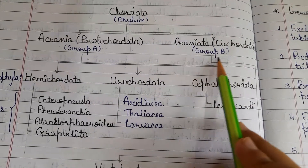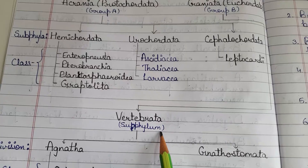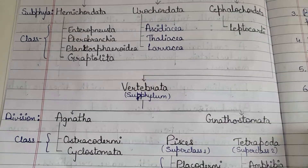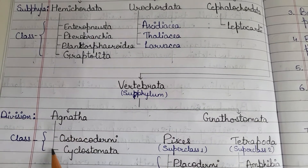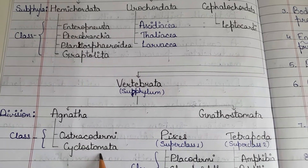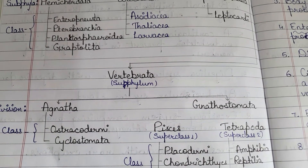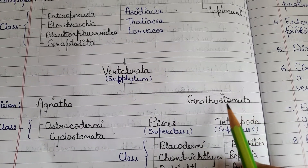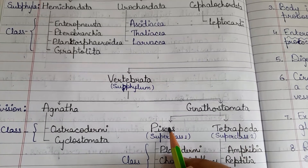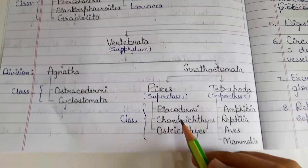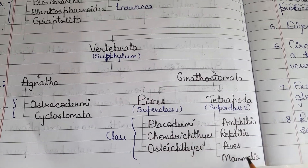The second group, Craniata (Euchordata), is sub-divided into sub-phylum Vertebrata. Vertebrata is divided into two divisions: Agnatha and Gnathostomata. Agnatha is divided into classes Ostracodermi and Cyclostomata. Gnathostomata is divided into two super classes: Pisces and Tetrapoda. Pisces contains classes Placodermi, Chondrichthyes and Osteichthyes. Tetrapoda contains classes Amphibia, Reptilia, Aves and Mammalia. This was the brief classification of Chordata, and we will discuss each in detail in next videos.